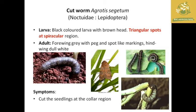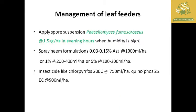The next pest is the cut worm, with the scientific name Agrotis ipsilon. The larvae are black-colored with a brown head and triangular spots at the spiracular region. The adult has four gray wings with big spot-like markings and dull white hindwings. The symptom is cutting of seedlings at the collar region, preventing further plant growth.